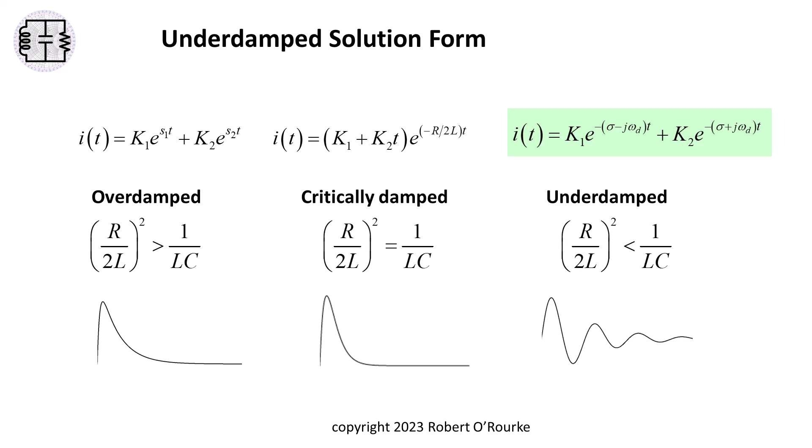The two roots are complex conjugates. This leads to the exponentially decaying sinusoidal shape of the current function.